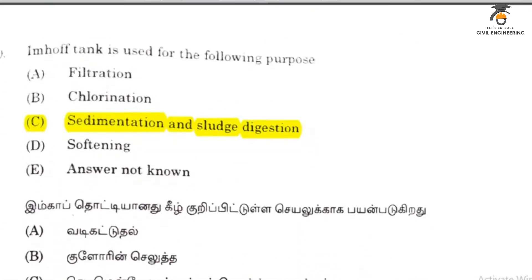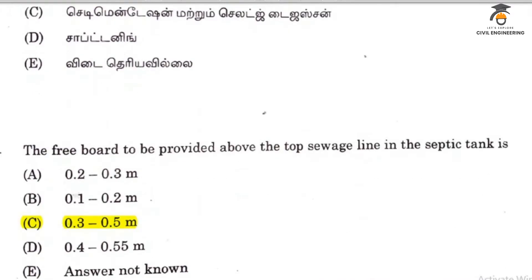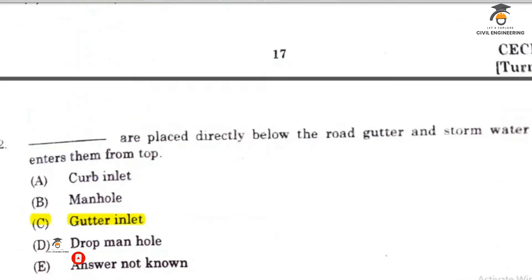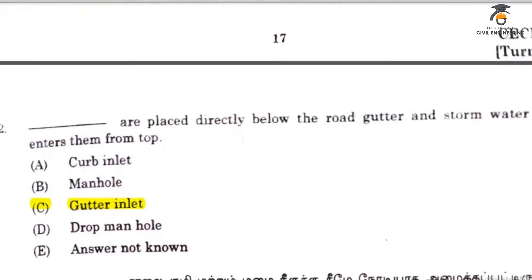Sedimentation and sludge digestion. Free board to be provided above the top of a sewage line visibility tank is 0.3 to 0.5 meter. Drains placed directly below the road gutter where storm water directly enters them from the top of the gutter are called gutter inlets.